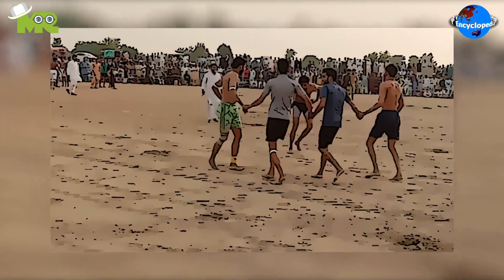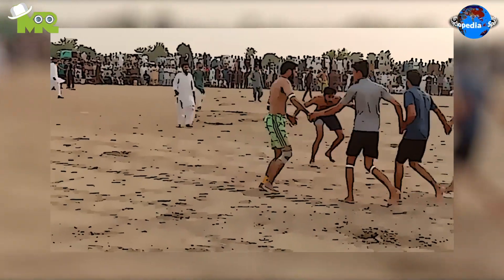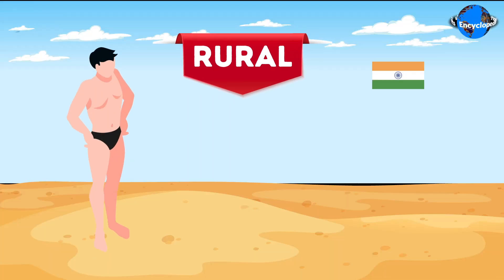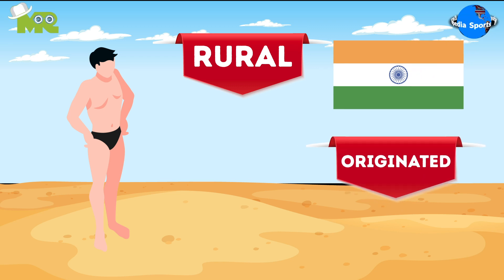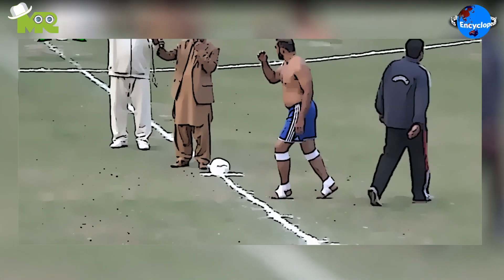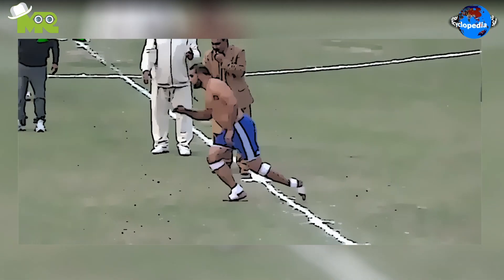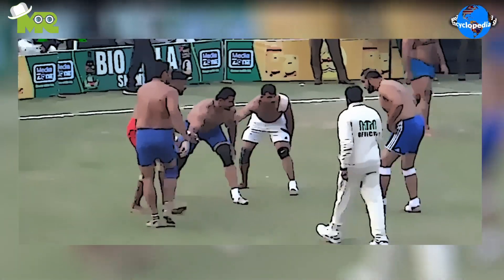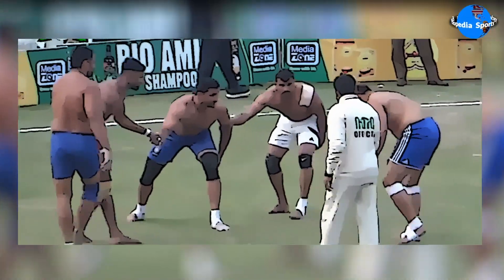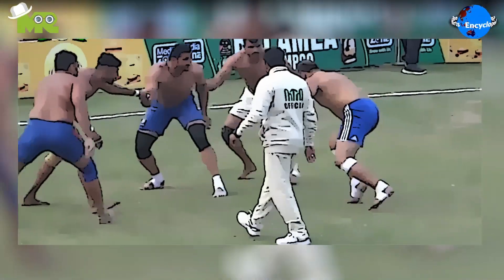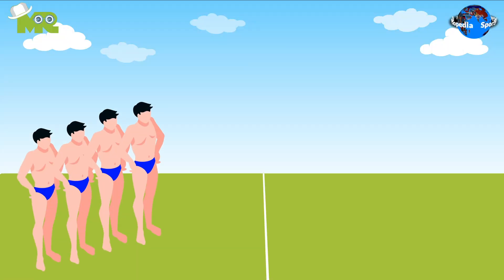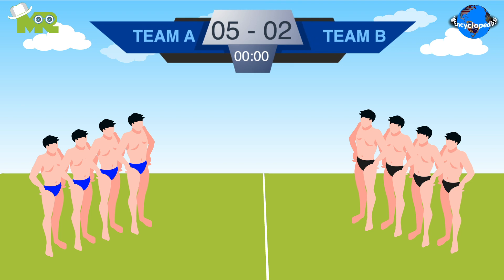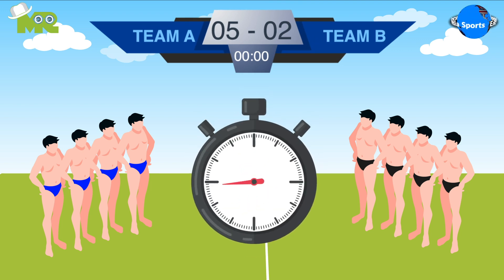Today in our Sports Encyclopedia series we talk about Kabaddi. Kabaddi is an ancient rural Indian sport that has origins in India. The game involves teams taking turns and sending a raider across to the opposite team's half, where the aim is to tag as many opponents as possible before returning to the home half. The basic objective for each player is to score more points than the opposing team within the allotted time.